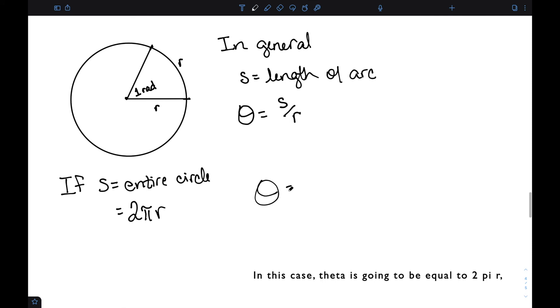In this case, theta is going to be equal to 2 pi r over r. The r's cancel, and I have 2 pi.